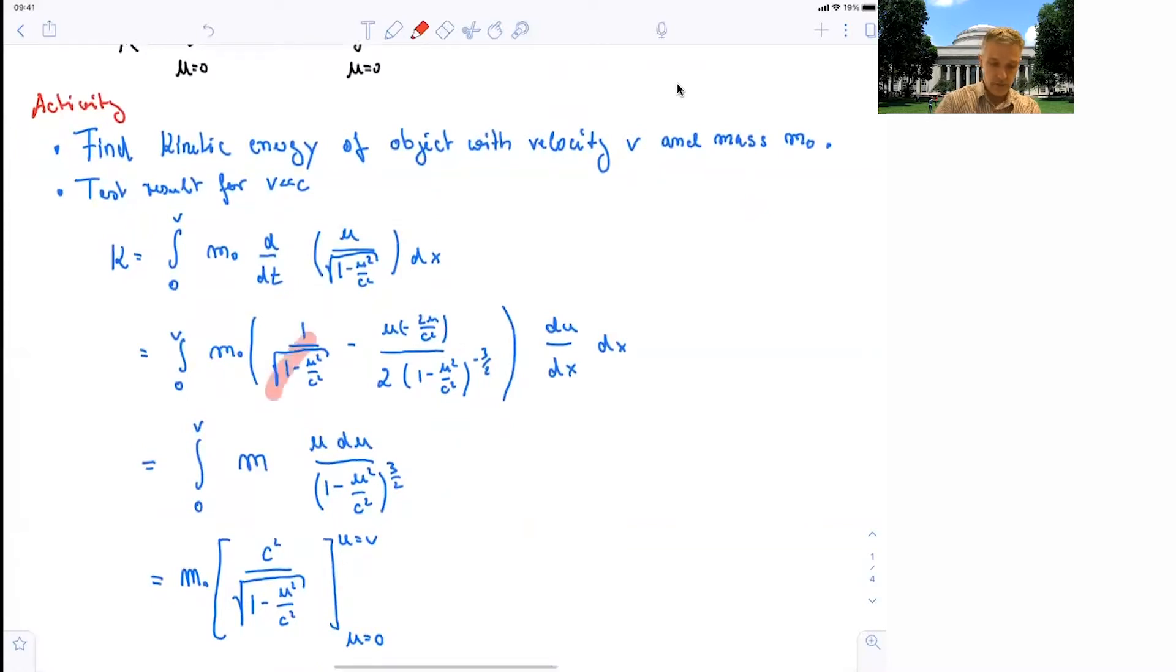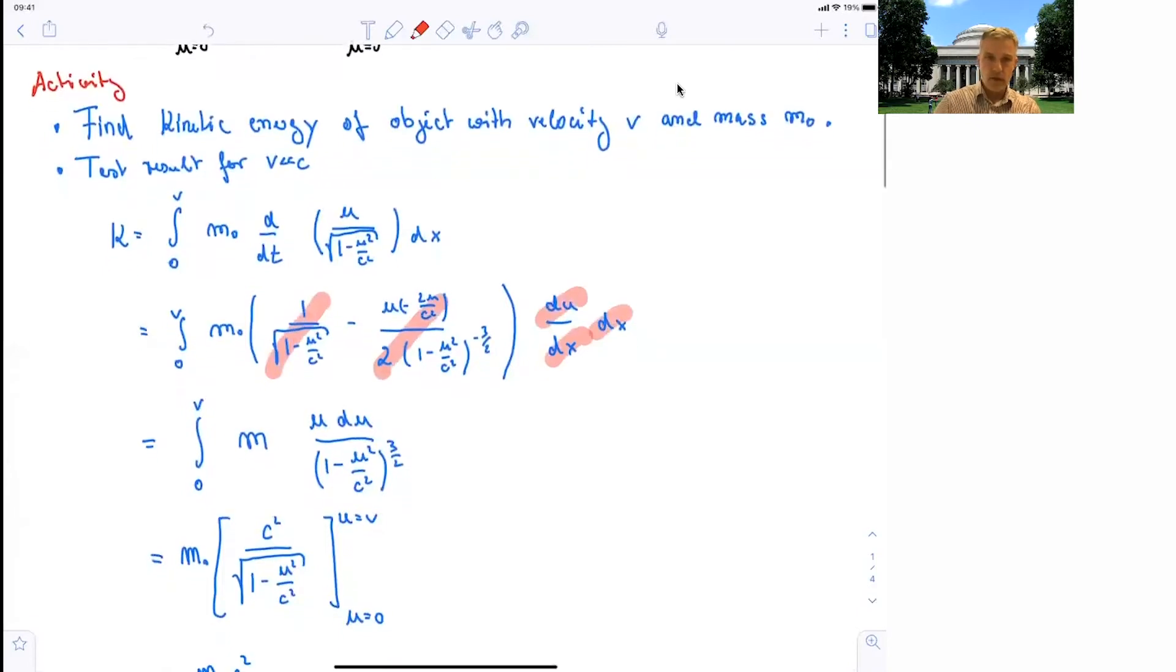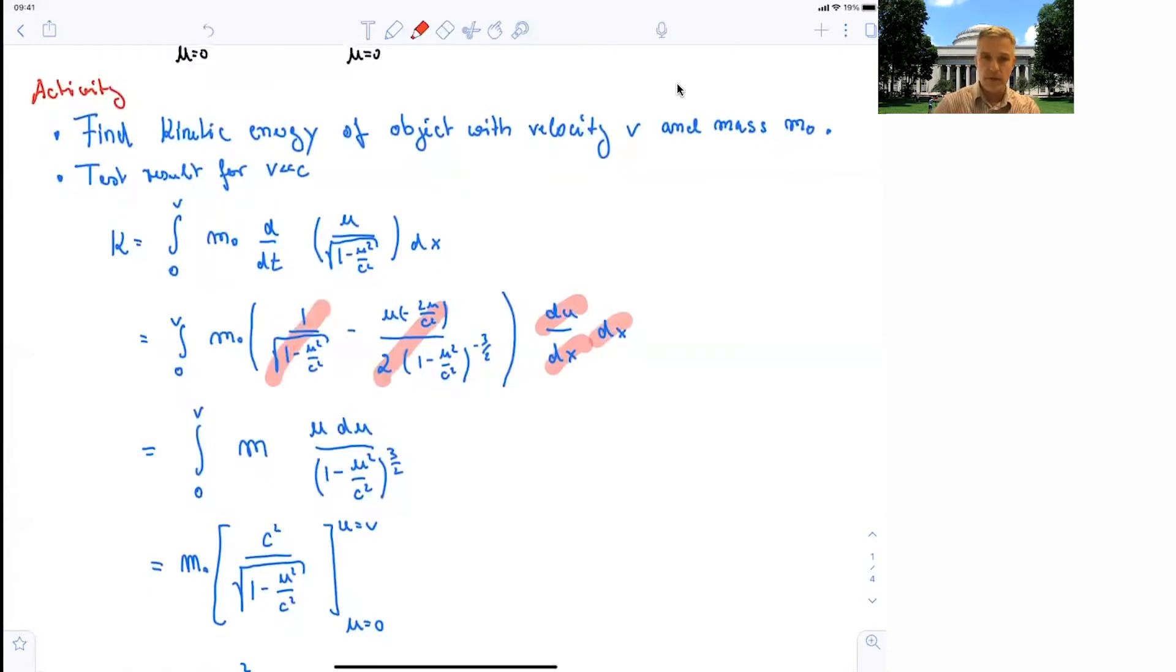And then we do a trick where we introduce this du/dx dx. And then the integral becomes an m times u du over (1 minus u squared over c squared) to the third power half. And then you can just look up the integral or work it out. Not that difficult, actually.